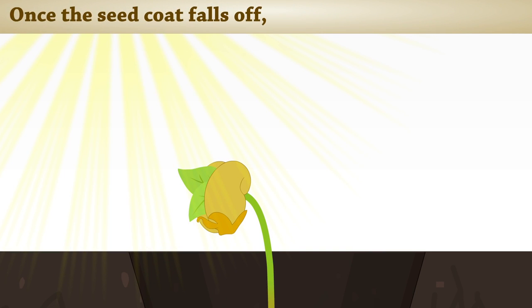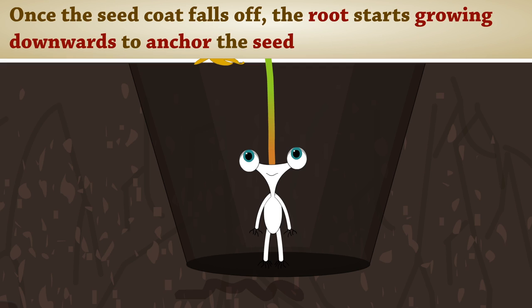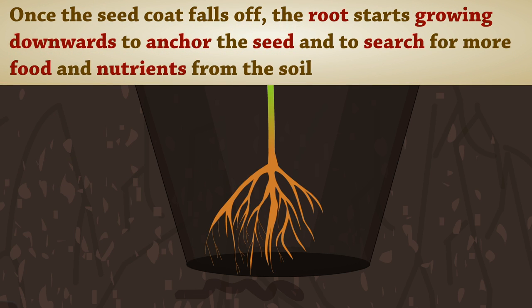Once the seed coat falls off, the root starts growing downwards to anchor the seed and to search for more food and nutrients from the soil.